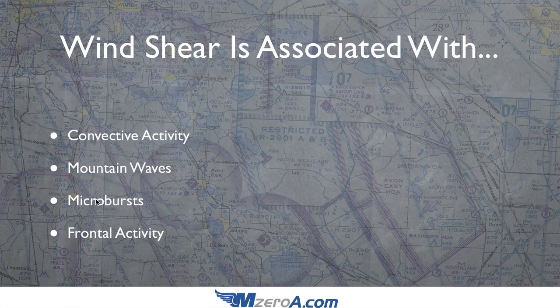Wind shear is also associated with mountain waves, microbursts — which we're going to look into quite a bit in this video — and frontal activity. Frontal activity meaning a cold front or warm front. As these fronts move in, they're almost always bringing a change in wind direction. So if you're right there on that frontal line, the wind could be going one way on one side of the airport and another way on the other side. That's where we get that shearing wind from.